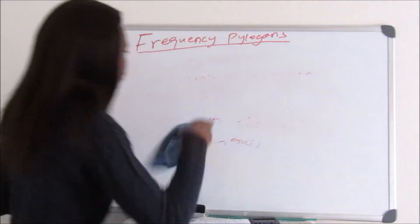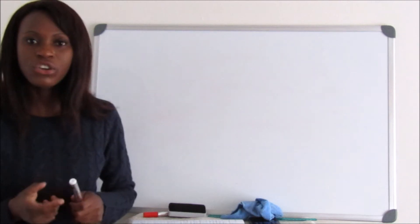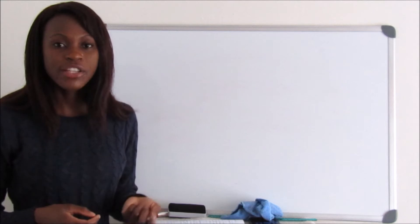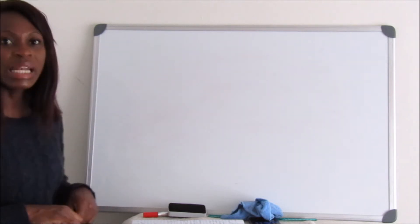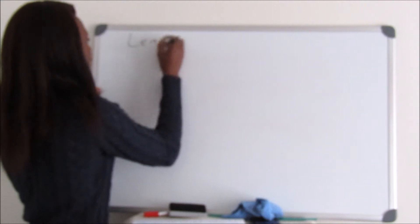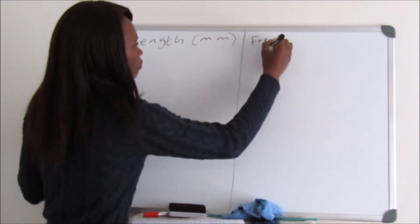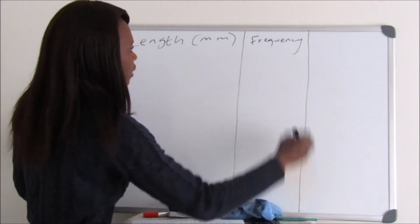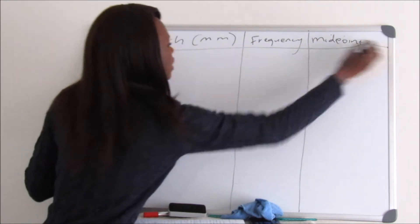Let's look at an example. From the example we did when constructing a histogram — you can check out that lesson — we'll use the same example. It was about grade 12 learners asked to measure the length of leaves in their biology class. We had length in millimeters, frequency, and this time we'll also add the midpoint.